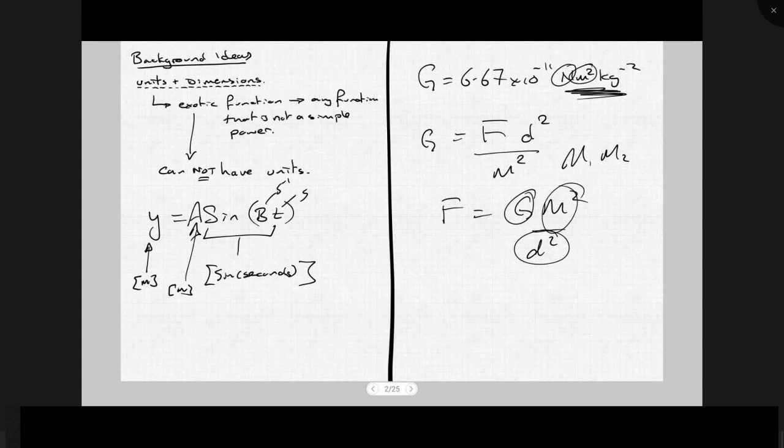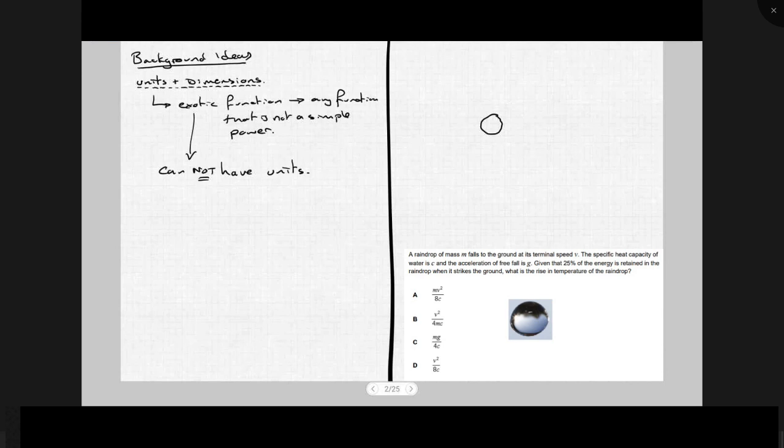One more thing, a raindrop. I'll draw a raindrop, there you go. It's not a perfect one, trust me, I can draw better than that. It's a raindrop, and it's falling at terminal velocity V towards the ground. Which of the following is the correct equation for the temperature rise of the raindrop?